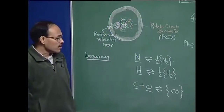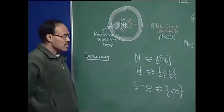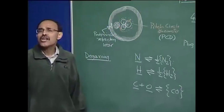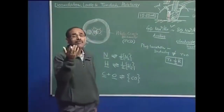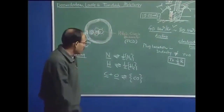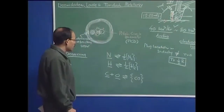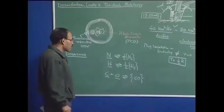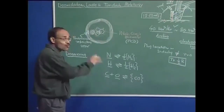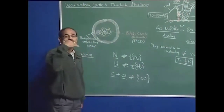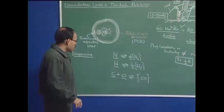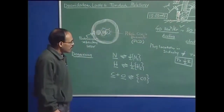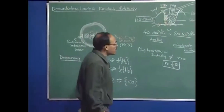That is why degassing in steelmaking is carried out under reduced pressure. We are talking about 1 millibar pressure — an extremely low pressure — at which we hold the steel for some time. To obtain that kind of pressure, we need pressure-tight chambers. There are various kinds of degassing processes in industry.